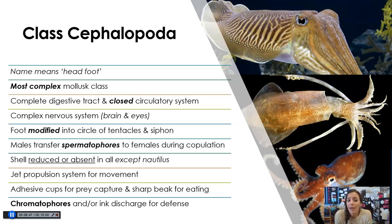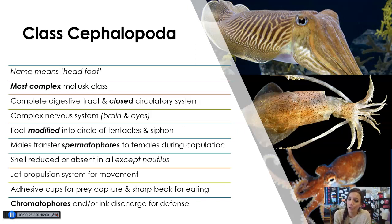Males actually transfer spermatophores — little sperm packets — taken from their mantle, and they have a special tentacle that inserts them into the female mantle. They also, as mentioned, have no shell — though the cuttlefish does have a cuttlebone, the squid has a thin pen structure, and the nautilus does have a shell, but for the most part these animals are shell-less. They use jet propulsion for movement, and have adhesive cups on their arms or tentacles for prey capture, a sharp beak for eating, and chromatophores — they can release ink to protect themselves and can also change colors.